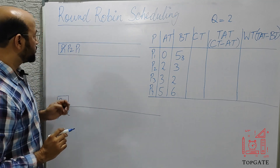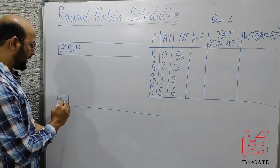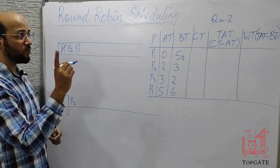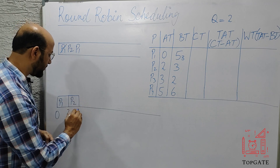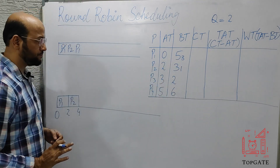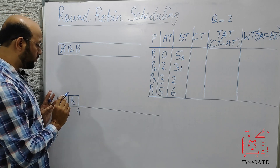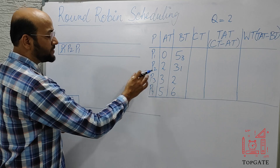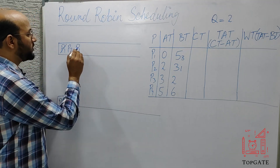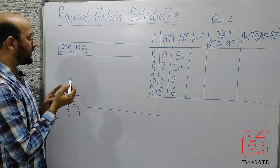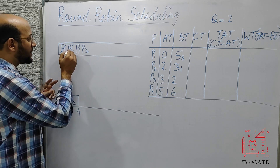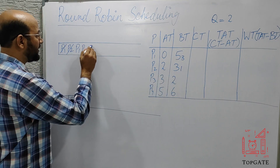P2 starts at time 2 with a requirement of 3 units, but the time quantum is 2, so it executes until time 4. P2 completes 2 of its 3 units, leaving 1 unit. At time 4, P3 has arrived so we add P3 to the ready queue. P2 still has 1 unit left, so we cut it and send it to the tail of the ready queue.